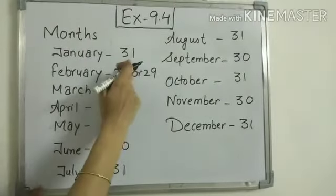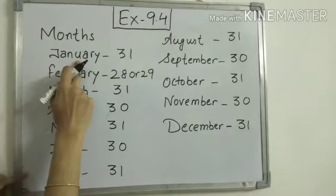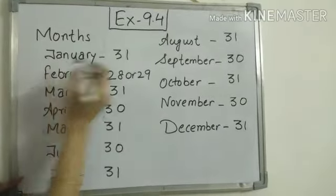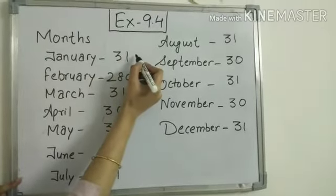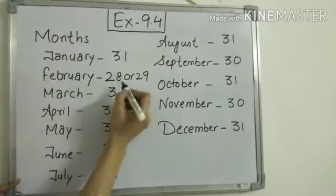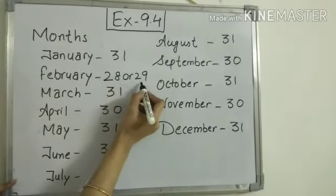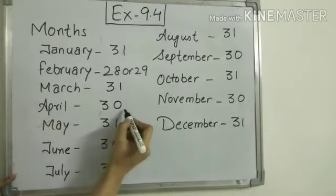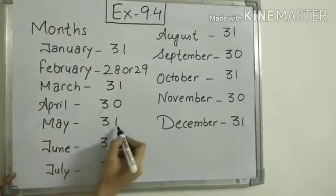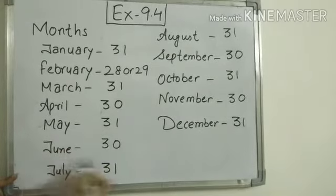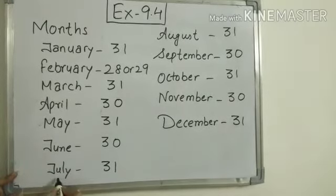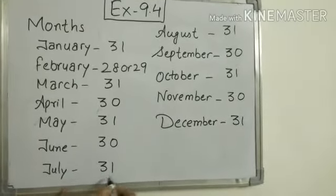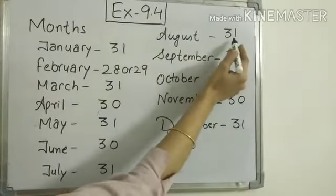and number of days in the month. So first is January, January has 31 days. February has 28 or 29 days. March has 31 days, April 30 days, May 31 days, June 30 days, July 31 days